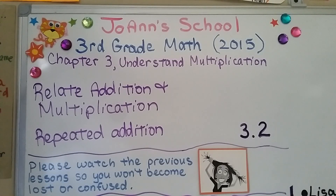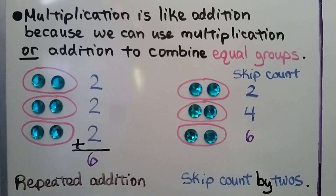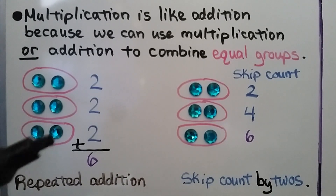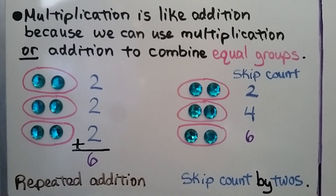We're at lesson 3.2 and we're going to talk about how to relate addition and multiplication. We're going to talk about repeated addition. Multiplication is like addition because we can use multiplication or addition to combine equal groups. We've got two gems and two gems and two gems — that's six gems in all. That's repeated addition.